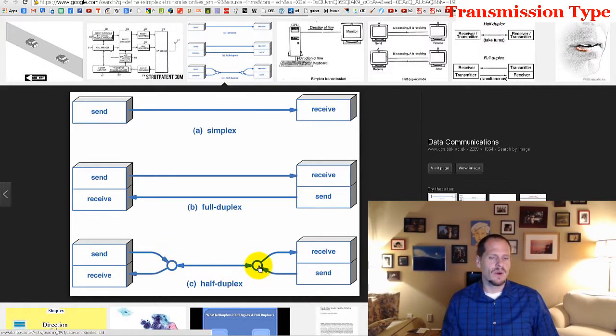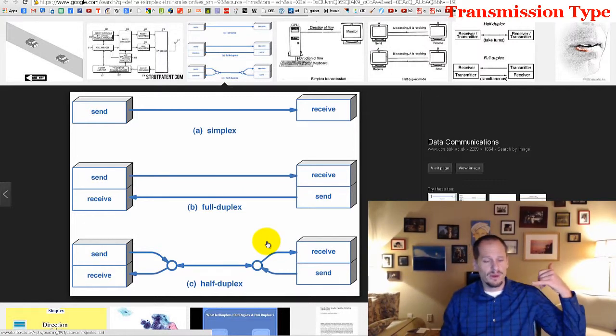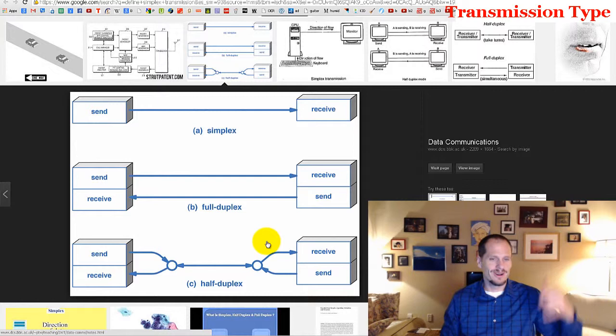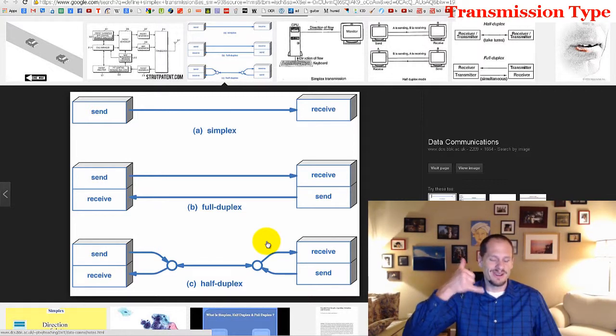Half duplex is like a walkie-talkie. It can go both directions, just not at the same time. So the walkie-talkie - 'what do you think of that? Over.' 'I think that's really boring. Over.' 'Yeah, well, it's definitions. What do you expect? Over.' That's half duplex.